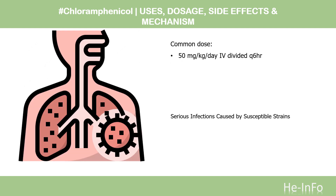Dose: For serious infections caused by susceptible strains: 50 mg per kg per day in 4 divided doses every 6 hours (Q6H).